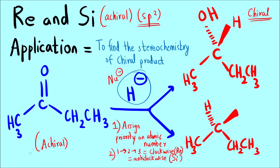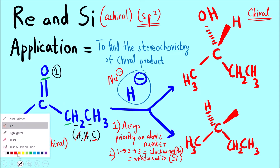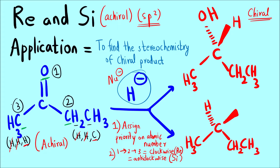We will assign priority to the groups. We have oxygen, carbon, and carbon. Oxygen gets first priority because its atomic number is higher than carbon. For the two carbons: one carbon is attached to hydrogen, hydrogen, and carbon; the other is attached to three hydrogens. Comparing those, the one with carbon attached gets second priority and the CH3 gets third. From 1 to 2 to 3 the direction is clockwise, so attacking from the top is the re face, and from the bottom is the si face.